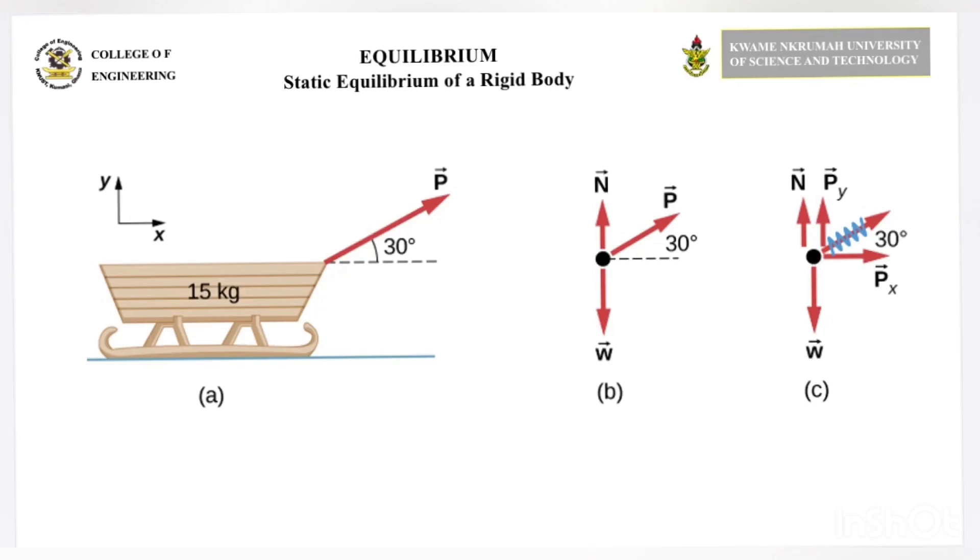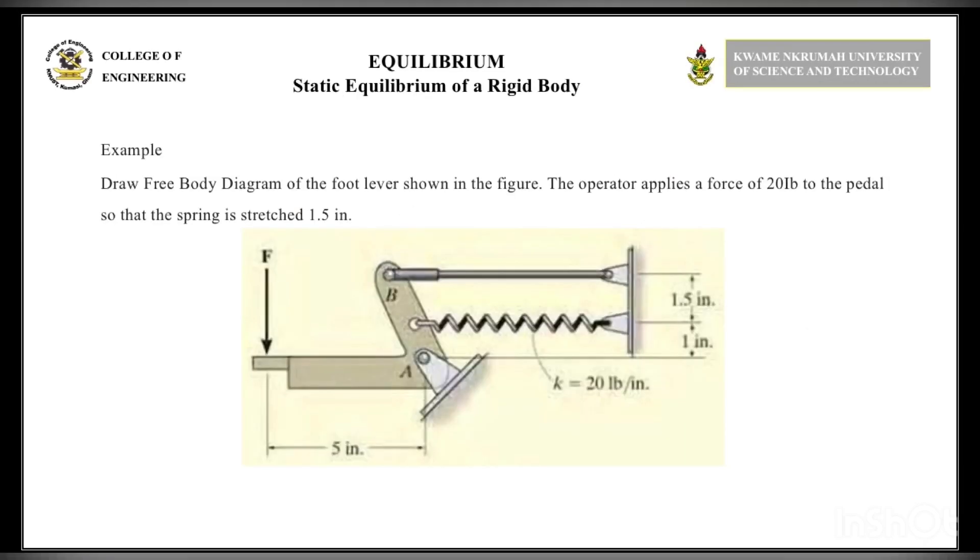The force acting on the body, P, is being shown there at an angle of 30 degrees. At point C, you resolve the force P to the x-axis and also to the y-axis at an angle of 30 degrees.